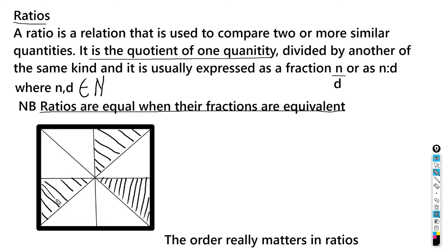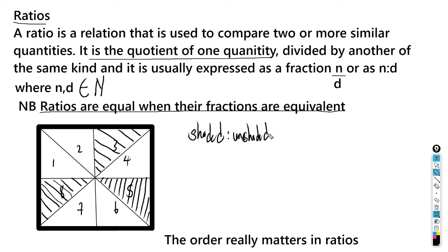Let's look at this example. We have a square divided into eight sections. As we can see, there are three shaded sections and five unshaded sections. An example of a ratio would be the shaded region to the unshaded region, and that would be three to five.